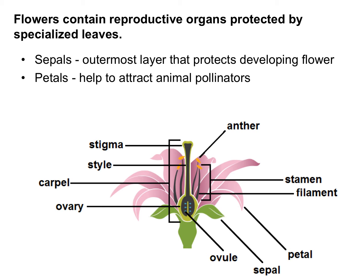Flowers contain all of the reproductive organs of a plant, and they are protected by specialized leaves near the bottom called sepals. The sepals actually protect the flower before it blooms open. When you see a bud, it's generally green and not the same color as the petals — that's because it's the sepal you're looking at, not the petals that would be inside. Different types of flowers have different sepals; some look like petals and are very similar in color, but others are just green.